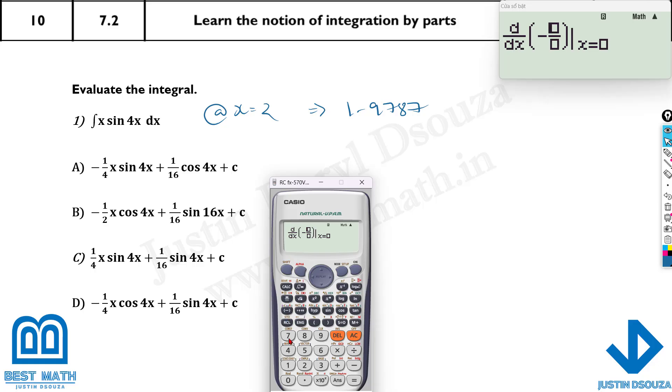So now what I do is shift dy by dx. Let me type this out. Minus 1 fourth. That is 1 by 4. And then we have sine X. Sorry, it's 4X. Okay, let me write 4 first. And then X. Close the bracket. Plus 1 by 16. And then we have again cosine 4X. And close the bracket. And what is the X value we had taken? 2. So is it matching? No, it's not.